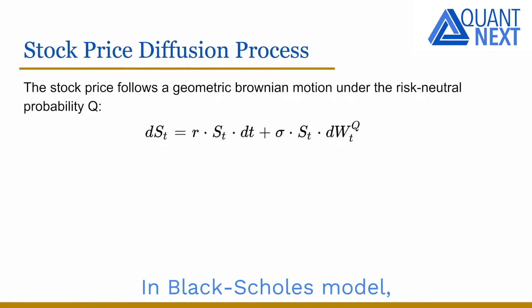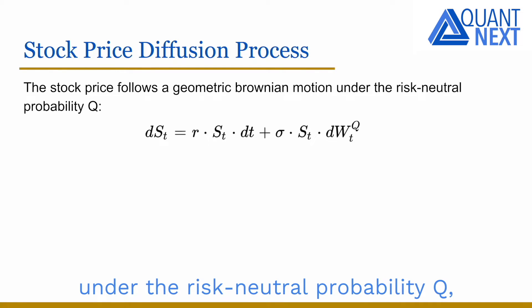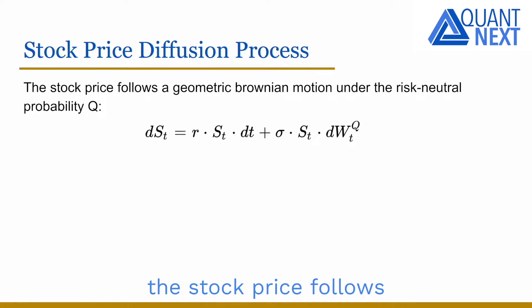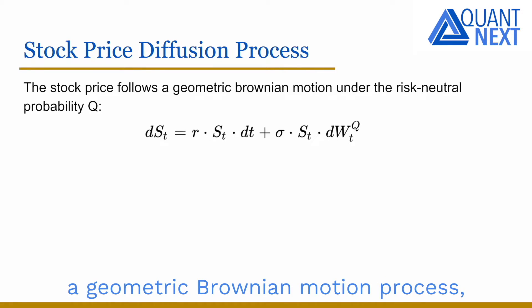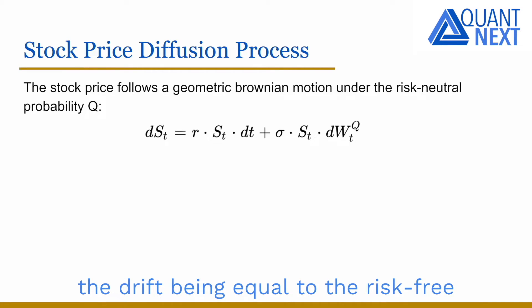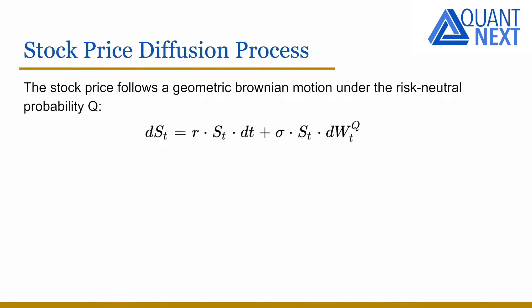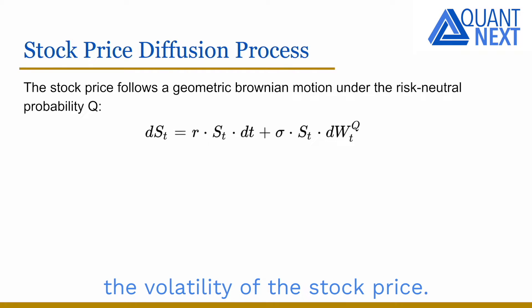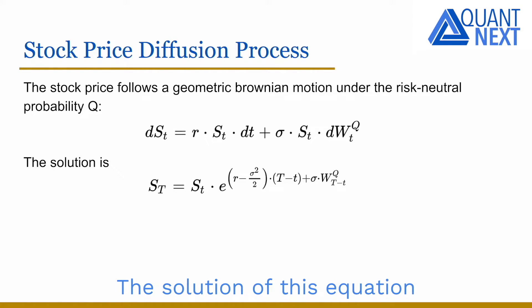In the Black-Scholes model, under the risk-neutral probability Q, the stock price follows a geometric Brownian motion process, the drift being equal to the risk-free interest rate, and sigma is the volatility of the stock price. The solution of this equation has the following expression.